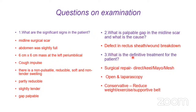What is the definitive treatment for the patient? Surgical repair — this can be direct repair, Keel repair, or Mayo's repair. Nowadays, mesh repair is more commonly performed. The procedures can be done either open or laparoscopically. There is also a place for conservative treatment: to reduce weight, exercises to strengthen the abdominal muscles, and wearing a supportive abdominal belt.